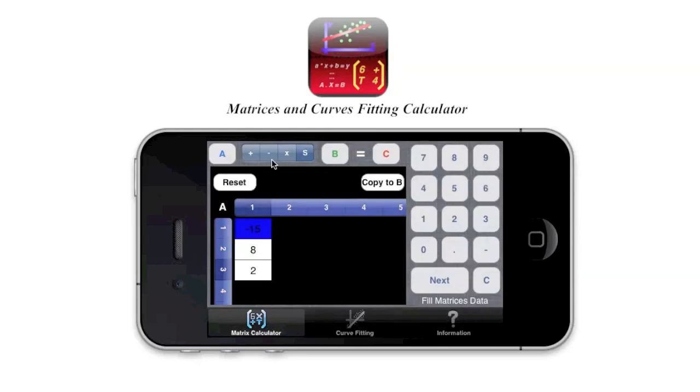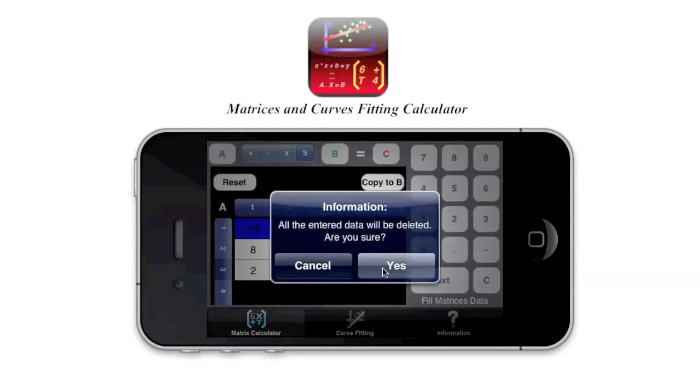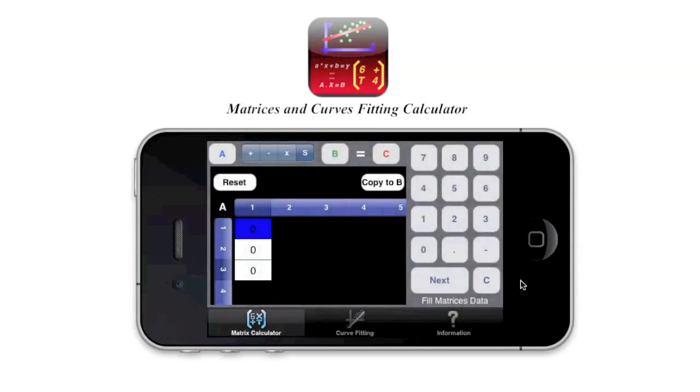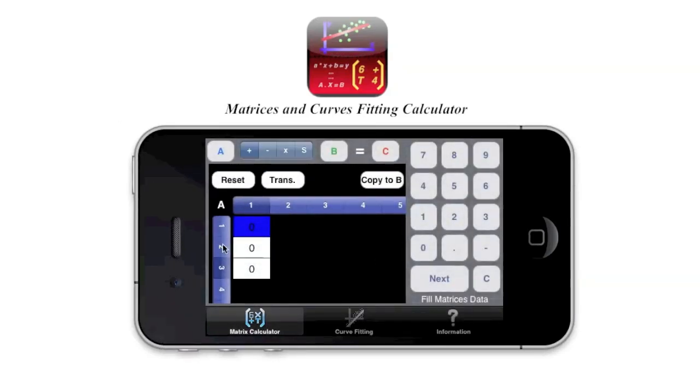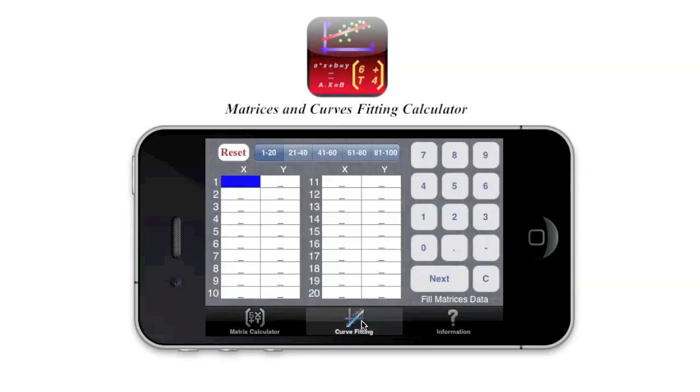So this is basically the first feature. So you can reset, of course, all data. So next, let's see the second feature, which would be the curve fitting mode. So here we can put up to 100 values.